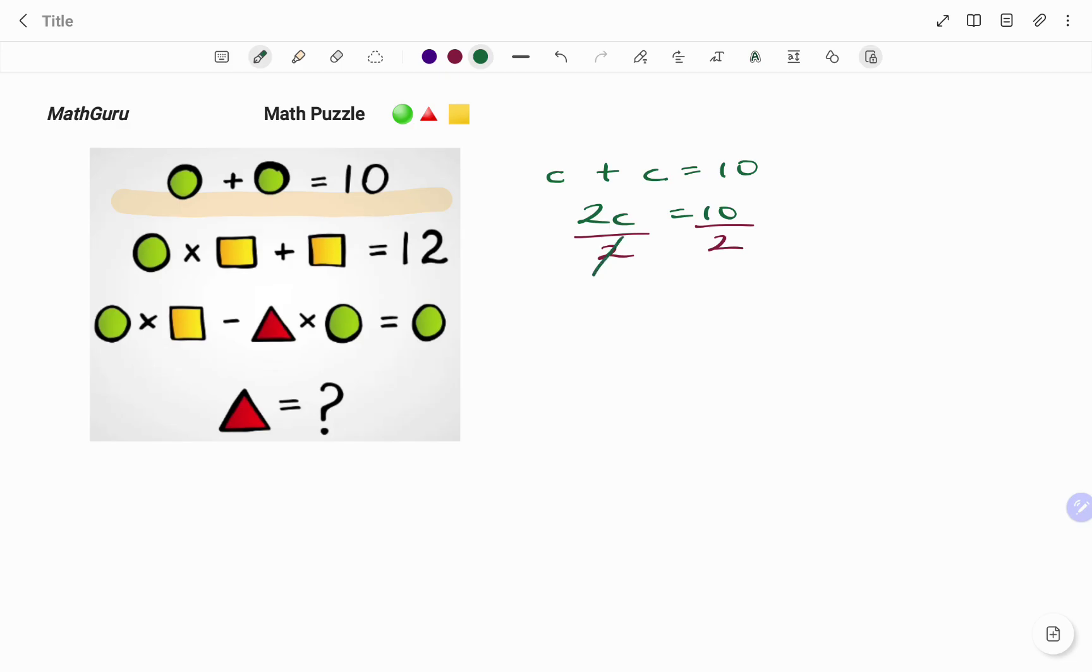So I have 2 in 2, 1. So therefore the value of C or the circle equals 10 divided by 2, that's 5. A quick check is if I have 5 plus 5, that will definitely give me 10.